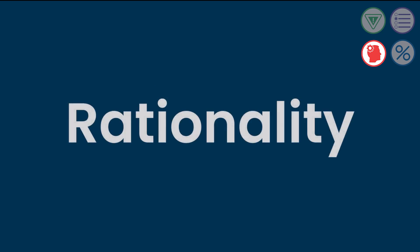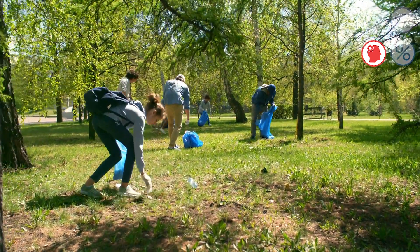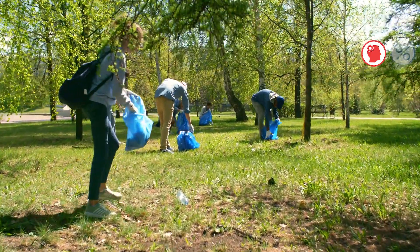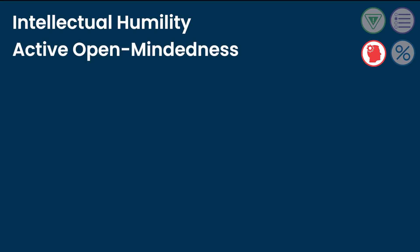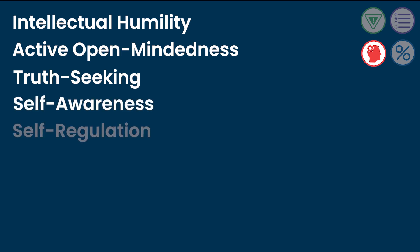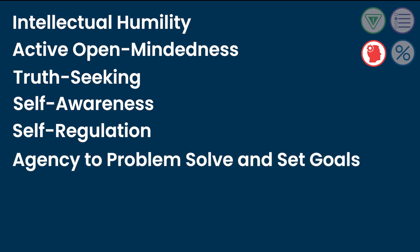Rationality is a well-defined and studied concept in the psychological sciences. To be rational means to have well-ordered and stable values, to try and see the world more accurately, and to behave in ways that are consistent with one's goals. The VAR standards can be applied across content areas to help students develop and demonstrate important dispositions for skillful decision making, such as intellectual humility, active open-mindedness, and truth-seeking. They address important foundations of decision making, such as self-awareness, self-regulation, and the agency to problem-solve and set goals.